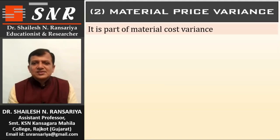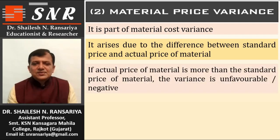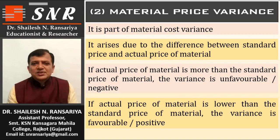Material Price Variance is part of Material Cost Variance. It arises due to the difference between standard price and actual price of material. If actual price is more than standard price, the variance is unfavorable, meaning negative. If actual price is lower than standard price, the variance is favorable, meaning positive.